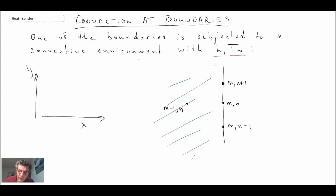So again, I'm putting an interior node, M minus 1, N. And just like before, what we are going to do, we are going to prescribe a control surface. Before I do that, let me denote our convective environment. So out here we have a fluid, could either be forced or natural, doesn't really matter. T infinity and H is the convective heat transfer coefficient.